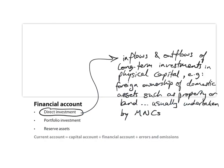This brings me to the financial account. The financial account consists of three sub-accounts. The first one is the direct investment sub-account. This refers to inflows and outflows of long-term investments in physical capital — for example, foreign ownership of domestic assets such as property or land. Direct investment, or foreign direct investment, is usually undertaken by multinational corporations, MNCs.